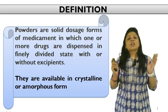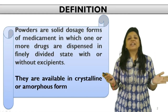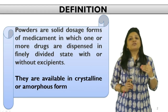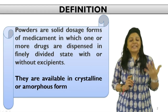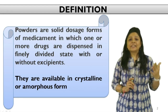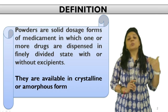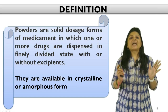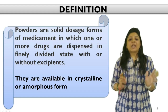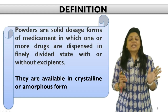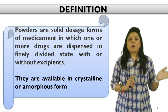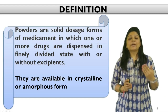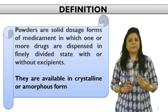How can you define a powder dosage form? It is a dosage form in which there is a medicament — either a single medicament or more than one medicament — with or without excipients. It can be available in different forms like crystalline or amorphous form depending upon its use and applicability.